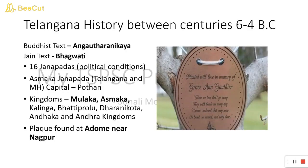There is a Buddhist text called Anguttara Nikaya, and with this text we understand the political conditions of that period. There is also a Jain text called Bhagavati, as you can see in the slide. These two books are the main sources for gaining knowledge about the 6th century BC. In the Buddhist text Anguttara Nikaya, 16 Janapadas are mentioned.